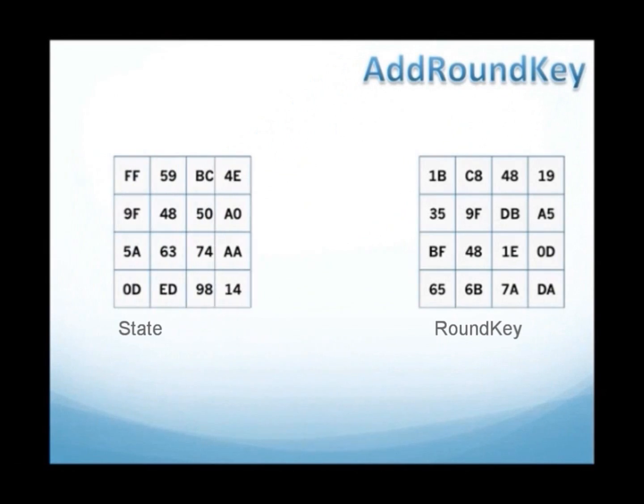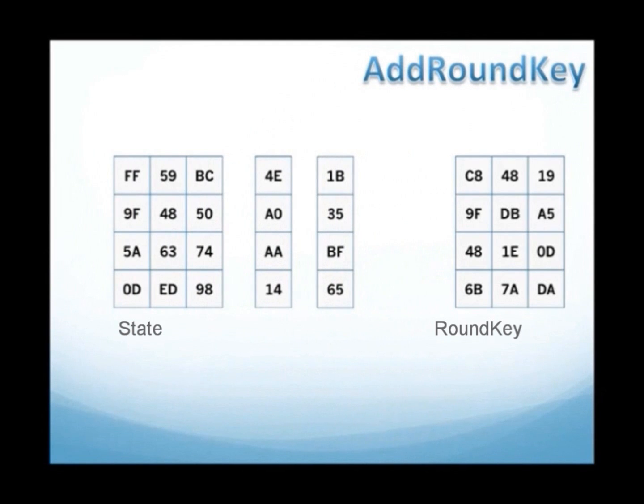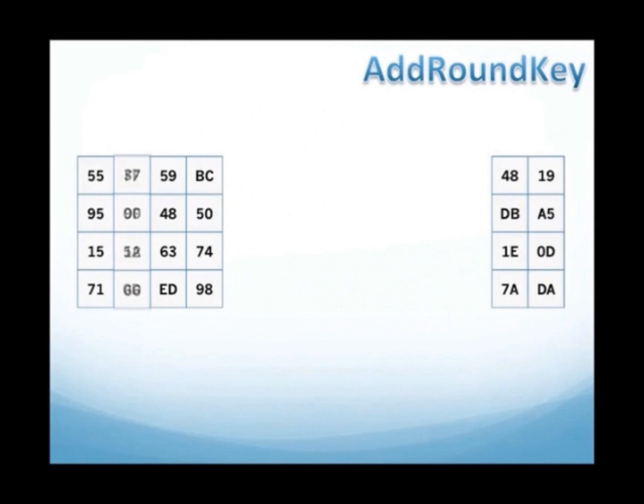AddRoundKey: In this step, the state matrix is combined with the corresponding round key. This combination consists of a bitwise XOR operation of the corresponding bytes in the matrices.